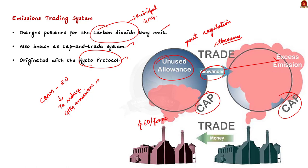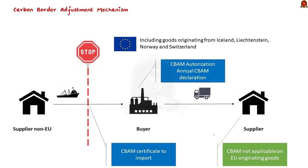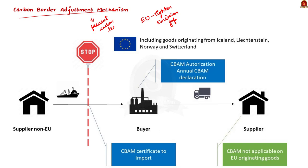Moving on to the Carbon Border Adjustment Mechanism. Under the Carbon Border Adjustment Mechanism, the European Union is proposing to tighten the emission gap further. This will phase out the number of free allowances it has long given to industries exposed to trade competition, like steel. In simple words, the Carbon Border Adjustment Mechanism is a climate measure trying to prevent the risk of carbon leakage. It aims to help slash the European Union's overall greenhouse gas emissions 55% below 1990 levels by 2030.